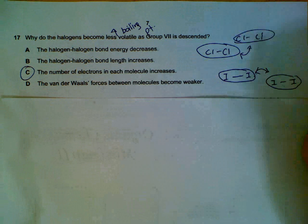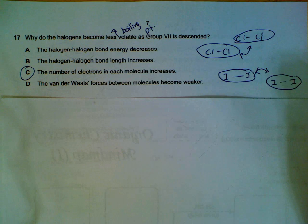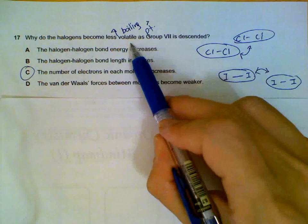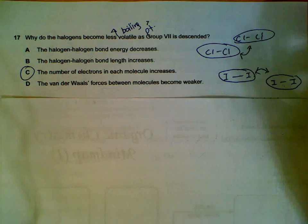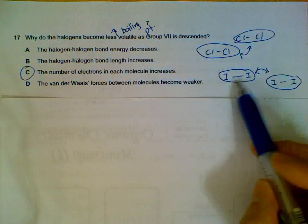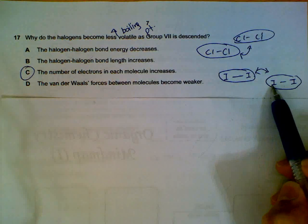Question 17. Why do the halogens become less volatile as we go down the group? Less volatile is another way of saying higher boiling point. Now, what is holding them together? The molecules holding them together will be the intermolecular attraction force.